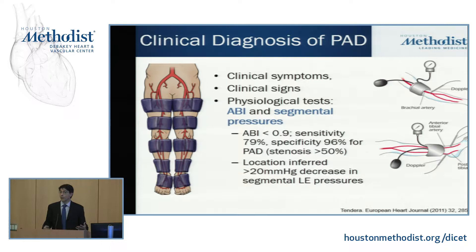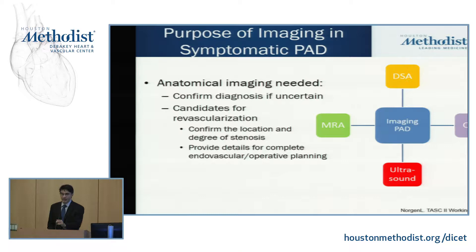When does imaging start getting into play? With anatomical imaging, there are several different techniques. We have the gold standard, which is digital subtraction angiography done in the catheterization lab. Then there are advanced imaging techniques such as CT and MRI, and finally ultrasound as well.